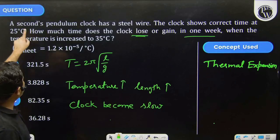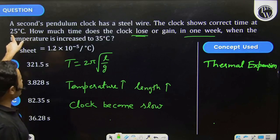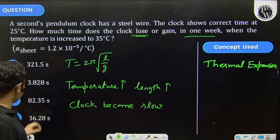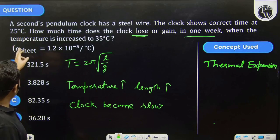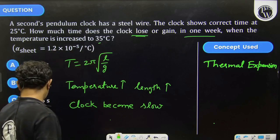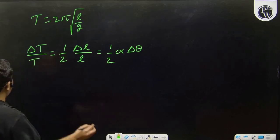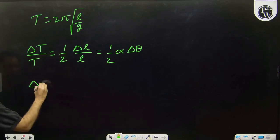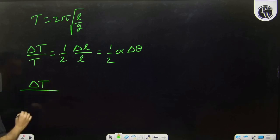The clock was giving correct time at temperature 25°C, and we have to find loss of time at 35°C. Hence ΔT we have to calculate. Time will be one week.